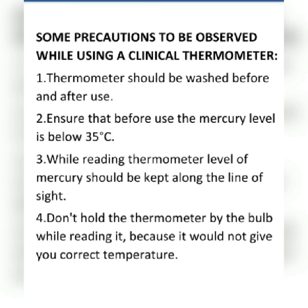There are some precautions to be observed while using a clinical thermometer. First, thermometers should be washed before and after use, and we must ensure before use that the mercury level is below 35 degree Celsius. While reading the thermometer, the level of mercury should be kept along the line of sight; otherwise, you cannot know the correct temperature. Last, we should not hold the thermometer by the bulb while reading it, as it would not give the correct temperature.